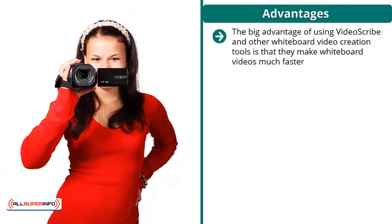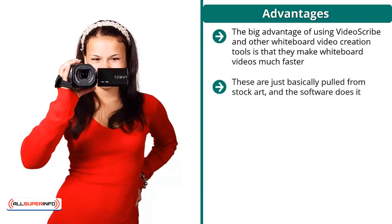The big advantage of using Video Scribe and other whiteboard video creation tools is that they make whiteboard videos much faster. You can do a hand animation using your actual hand, but that's going to take forever. These images are basically pulled from stock art and the software creates the illusion that it's drawing the pictures, but the pictures are actually pre-loaded.